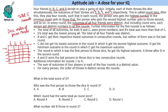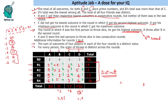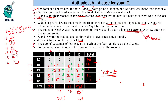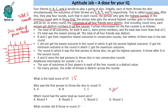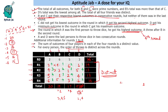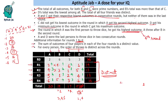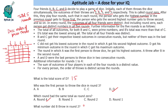Now we can answer the questions. What was the total score of D? D did not throw 6, so D's total is 15. Who was the first person to throw the dice in round 3? The first person was D. Which round had the same total as round 0? Round 0 had a total of 16 and round 4 also had a total of 16. What number did B throw in round 2? In round 2, B threw the number 3. This was the complete solution to the set.